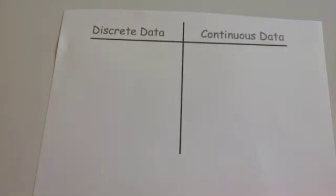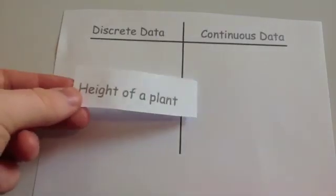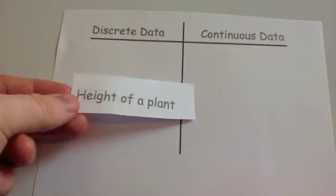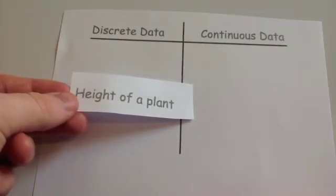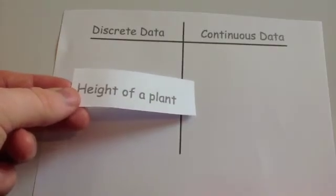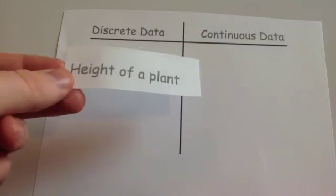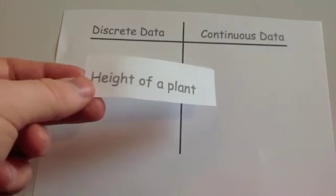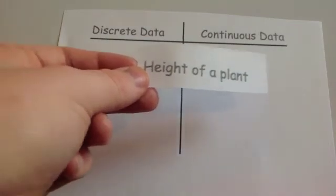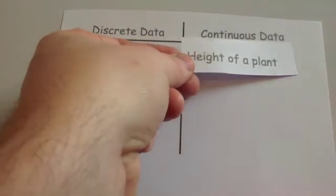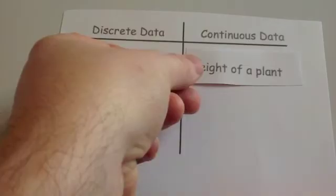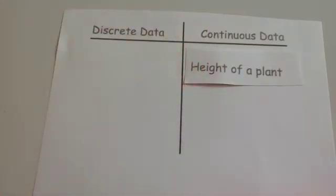So now I'm going to do a simple question where we've got to organise data into discrete or continuous data. The first one: the height of a plant. The height of a plant you would measure probably in centimetres, but you can also go into decimal values — you can take any value on that scale of its height. So it's going to be continuous data.